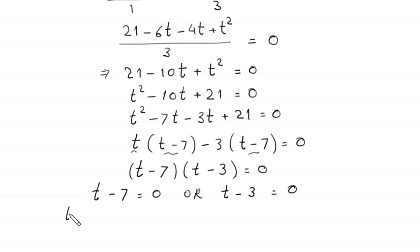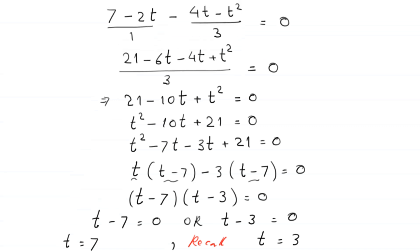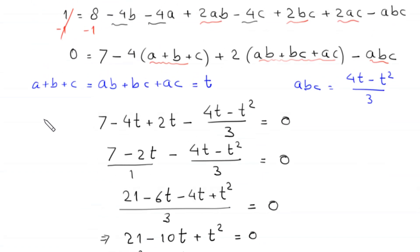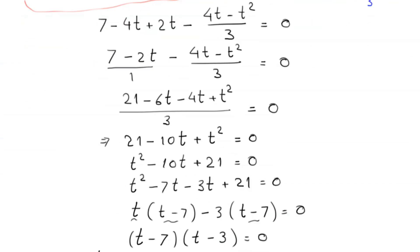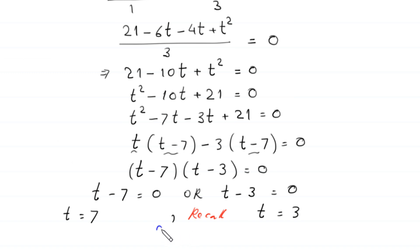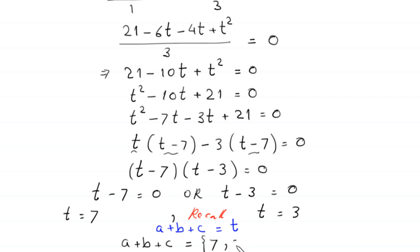Recall that we supposed a + b + c = t. Therefore, we get two solutions: a + b + c = 7 or a + b + c = 3. This is the final answer of this problem.